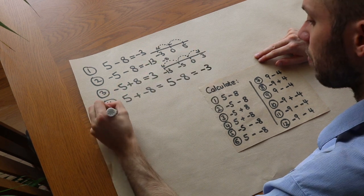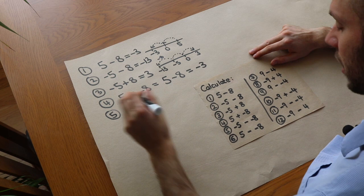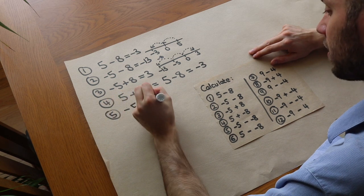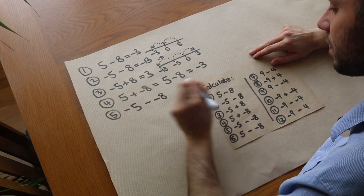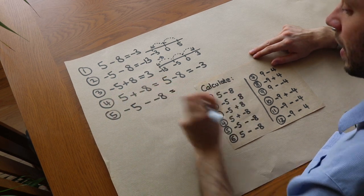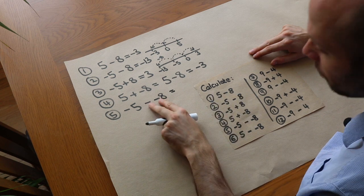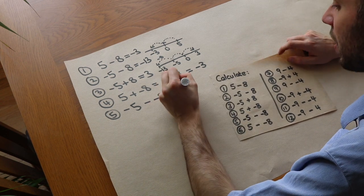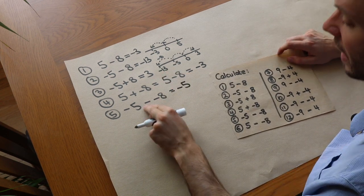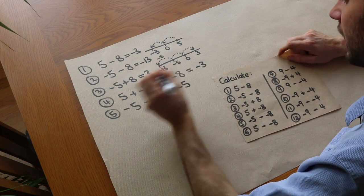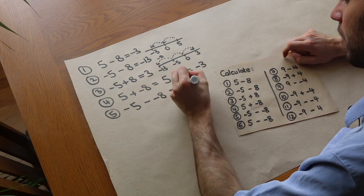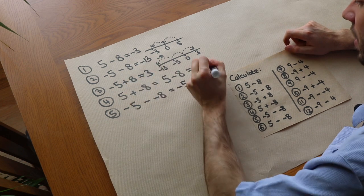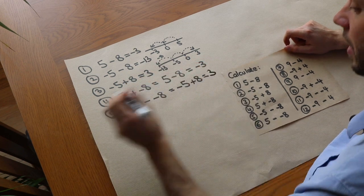What about the fifth one — minus five minus negative eight? The two minus symbols next to each other can be replaced with a plus, because when we subtract a negative number we instead add. So it becomes minus five plus eight, and we already know that equals three.